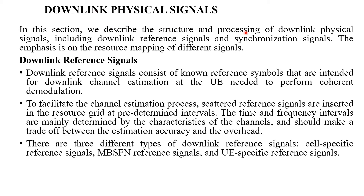Downlink physical signals. In this section, we describe the structure and processing of downlink physical signals, including the downlink reference signal and the synchronization signal. The emphasis is on the resource mapping of different signals. Downlink reference signals consist of known reference symbols intended for downlink channel estimation at the user equipment, needed to perform coherent demodulation. To facilitate the channel estimation process, scattered reference signals are inserted in the resource grid at predetermined intervals. The time and frequency intervals are mainly determined by the channel characteristics and should make a trade-off between estimation accuracy and overhead.